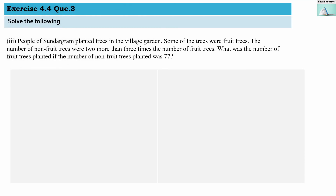Question 3: People of Sundar Gram planted trees in a village garden. Some of the trees were fruit trees. The number of non-fruit trees was 2 more than 3 times the number of fruit trees. What was the number of fruit trees planted if the number of non-fruit trees planted was 77? Let us assume the fruit tree count is x. We know non-fruit trees are 77.